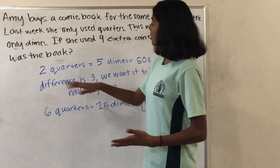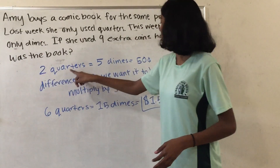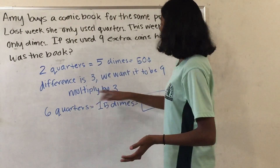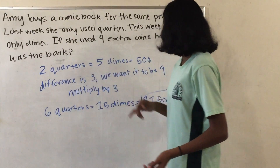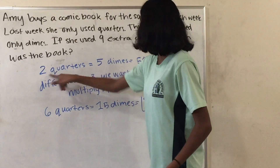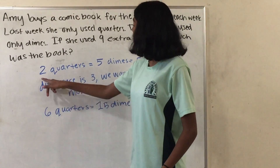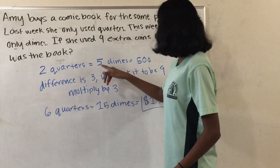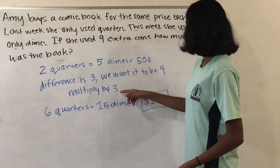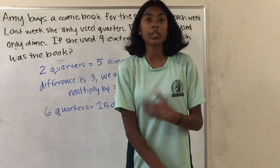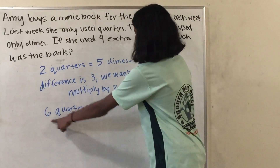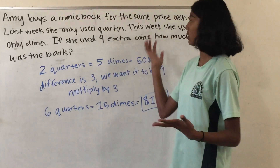Let's do a bit of a ratio first. 2 quarters equals 5 dimes, since they're both equal to 50 cents. The difference between the number of coins is 3, but we want the difference to be 9, so we multiply everything by 3. So 6 quarters — because 2 times 3 is 6 — equals 15 dimes — since 5 times 3 is 15 — which equals $1.50, since 50 cents times 3 is $1.50. And to check: 15 minus 6 equals 9, which is our difference, and these two are equal, which satisfies that the book is the same price.